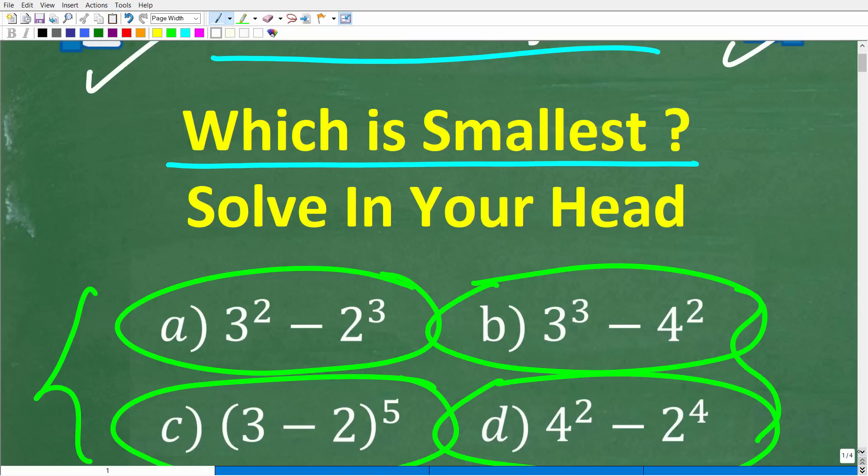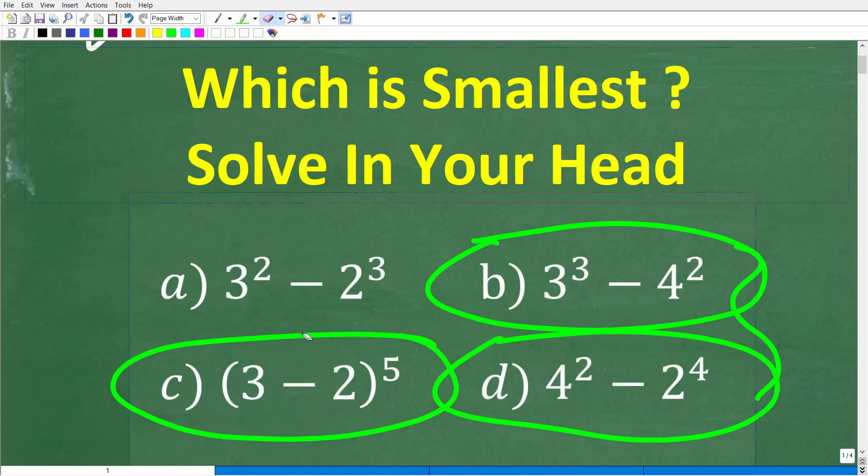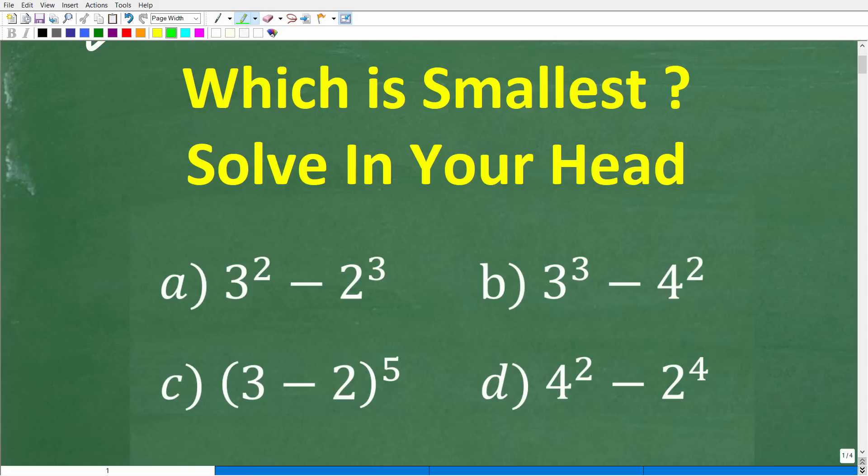All right, now, just because we're using mental math here doesn't mean we have to do this problem fast. Matter of fact, it really does mean that we're going to have to pause the video and think about each one of these values, right? So again, we're trying to determine the smallest value out of these four numeric expressions. So let's take a look at the correct answer. The correct answer here is D, which is 4 squared minus 2 to the fourth.